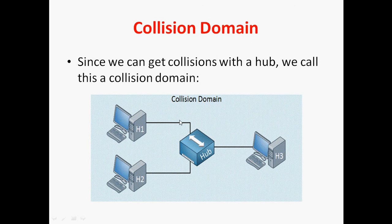Since we can get collisions with a hub, we call this a collision domain. In a hub, even if we have three PCs connected, there is still only one collision domain. At any one time, only one PC can send or receive data; the rest must wait. If more than one PC tries to send data at the same time, collision will occur. For that reason, we use the CSMA/CD protocol.